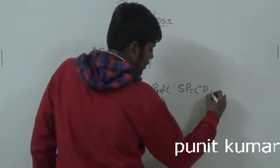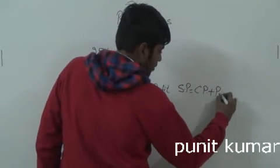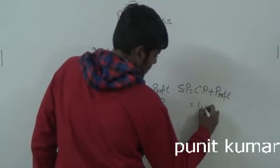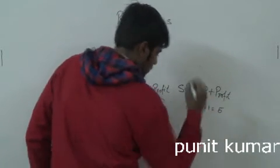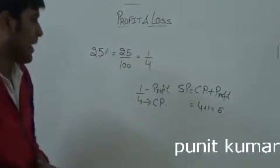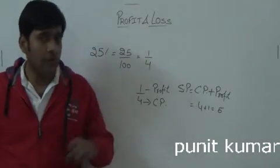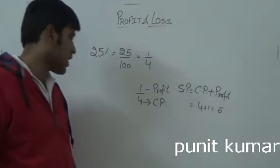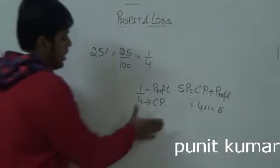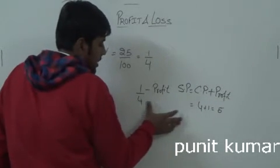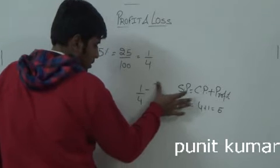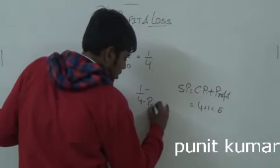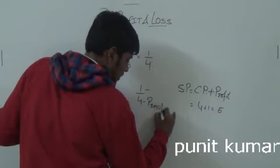So SP equals CP plus Profit, which is 4 plus 1 equals 5. In this same topic, Profit and Loss will also connect to Simple Interest and Compound Interest. In that context, CP becomes the Principal.